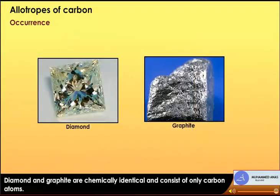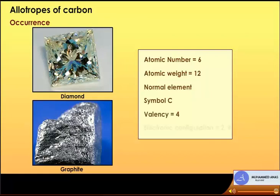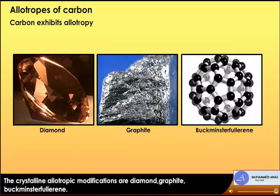Carbon has atomic number 6, atomic weight 12, symbol C, and valency 4 with electronic configuration 2, 4. Carbon exhibits allotropy. The crystalline allotropic modifications are diamond, graphite, and buckminsterfullerene.